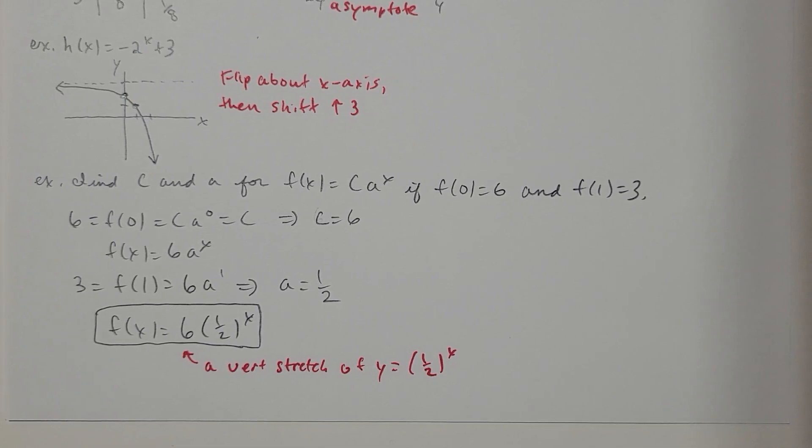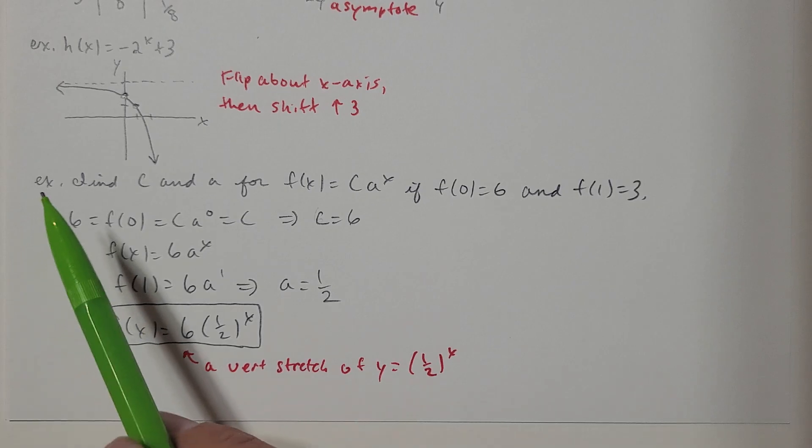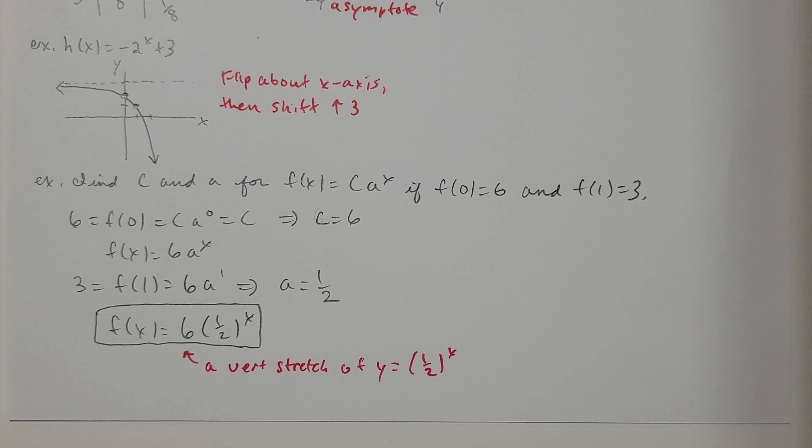We'll get back to section 4.1 and 4.2 here. I'm combining these two sections together. We're on this example here next. We want to find C and A for the function f(x) equals C times A to the x if f(0) is 6 and f(1) is 3.